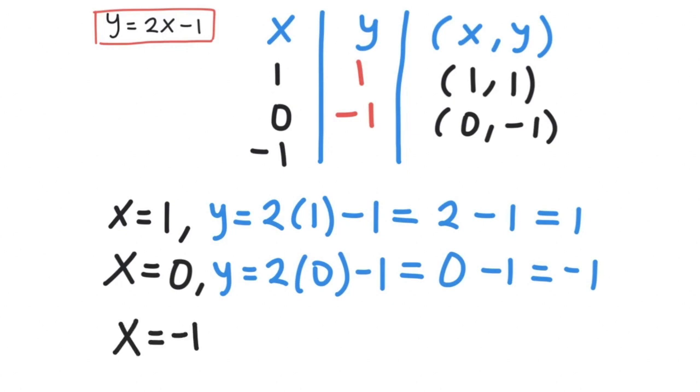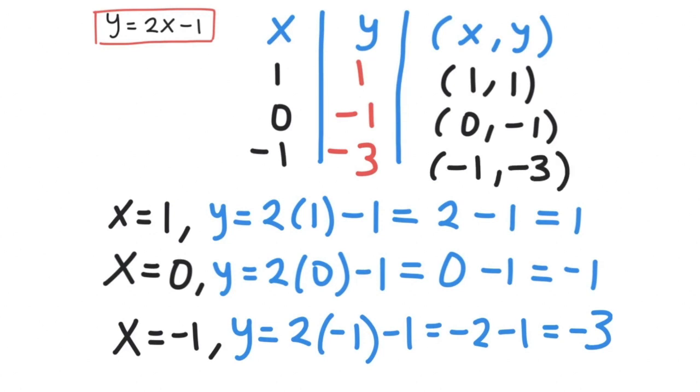The third one, if we put negative 1 for our x value, we'll have y equals 2 multiplied by negative 1 minus 1, which is negative 2 minus 1, and this is equal to negative 3. Put it in the table, and then our x comma y becomes negative 1 comma negative 3.